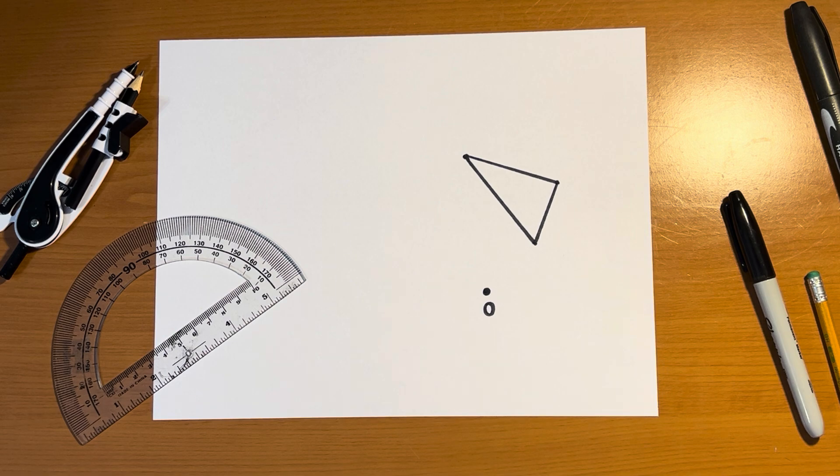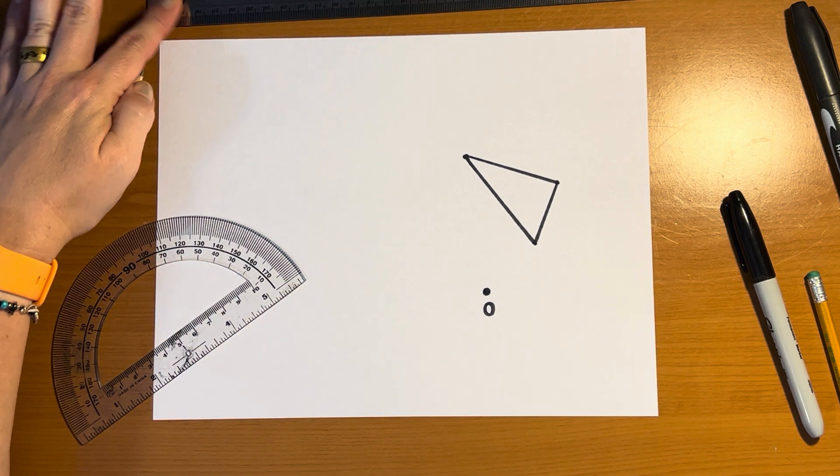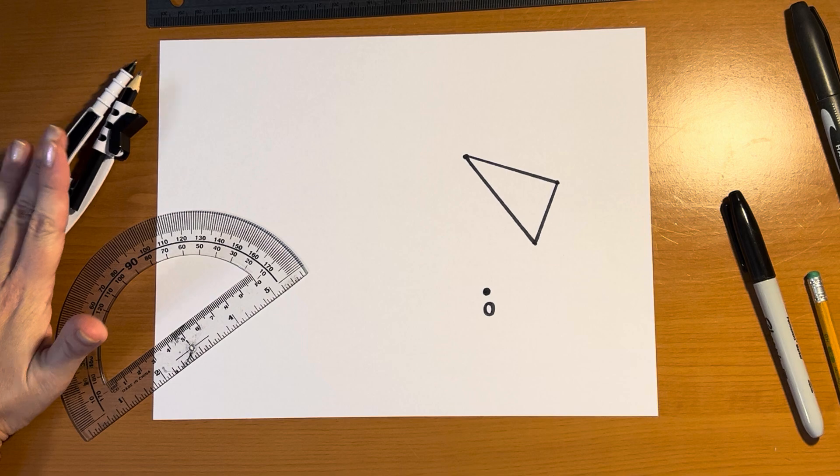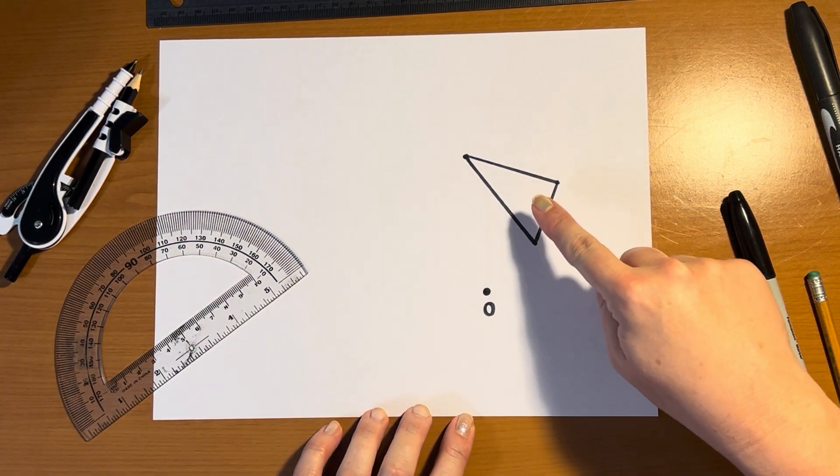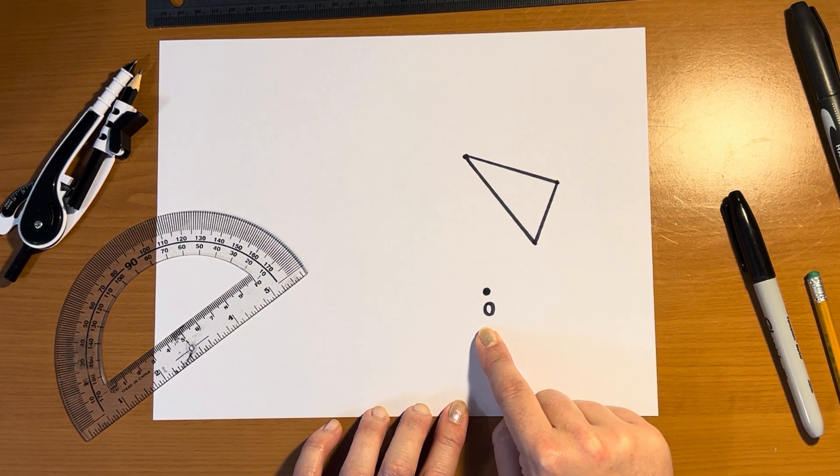In this video, we're going to practice using our tools, our ruler, our protractor, and our compass to rotate this triangle around this point O.